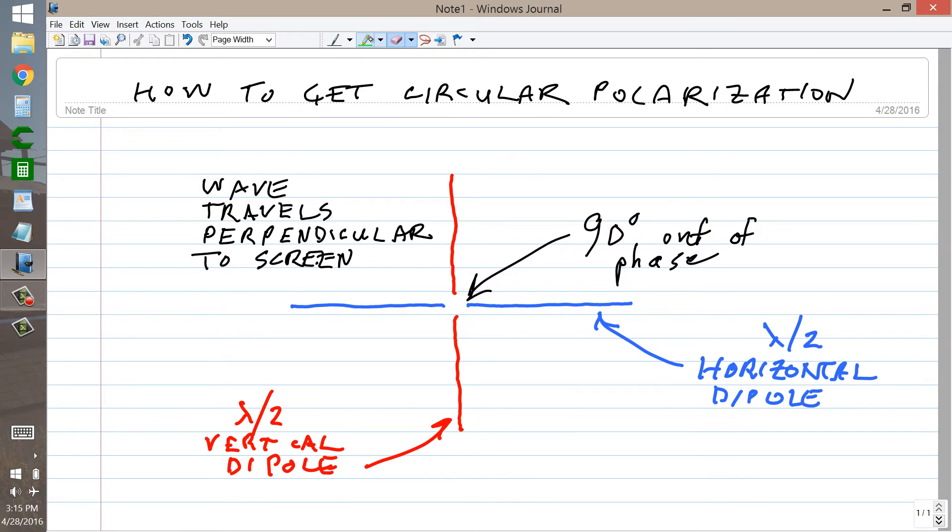However, if you feed them in phase quadrature and if the signal in both antennas is of the same strength, you are going to get a circularly polarized wave. The vector of the electric field component of the wave is going to rotate as it comes at you or goes away from you. I am not going to worry here, and neither should you, about which sense is right-handed and which sense is left-handed for the direction of the rotation of the electric lines of flux.